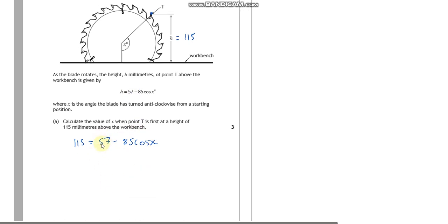So how do I get rid of 57? I'll take it away from both sides. So it's 58 equals negative, and that was 85 cos x. How do I get rid of negative 85? Well, I'll divide that. So 58 divided by negative 85 is going to be equal to cos x.